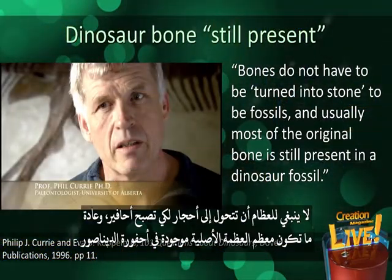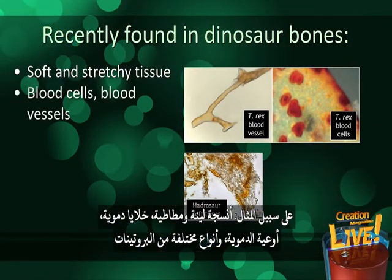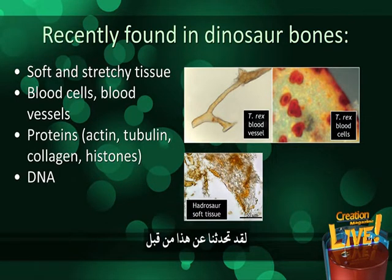Dr. Phil Currie, a world-famous dinosaur hunter, said in one of his books: 'Bones do not have to be turned into stone to be fossils, and usually most of the original bone is still present in a dinosaur fossil.' That's an amazing statement — the original biological material, the bone, is actually still there. Over the past 20 years or so, scientists have made amazing discoveries inside these unfossilized dinosaur bones: soft and stretchy tissue, blood cells, blood vessels, different kinds of proteins, and even dinosaur DNA.